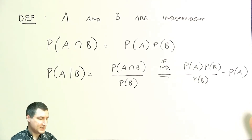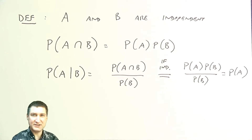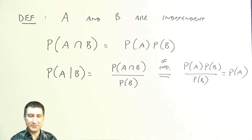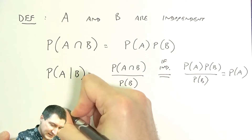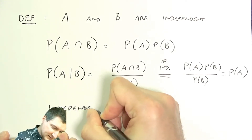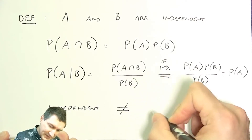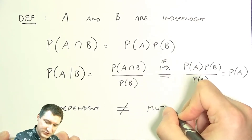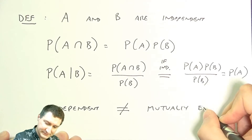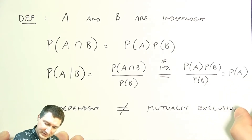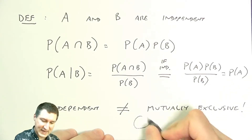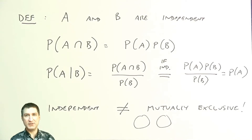Just to be clear: independence doesn't mean A and B can't happen at the same time. Two events being independent is not the same as being mutually exclusive — meaning they don't have any outcomes in common. Independence doesn't mean A and B are totally disjoint; it just means that knowing B doesn't give me any new information about A.